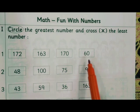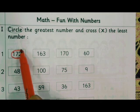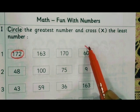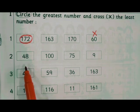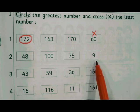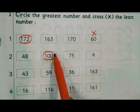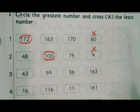So here the greatest number is this one, 172. You have to circle this one. The least number is 16, the small number. Next: 48, 100, 75, 9. The greatest number is here, 100, and the 9 is the least number, one digit.